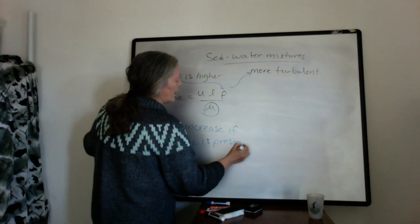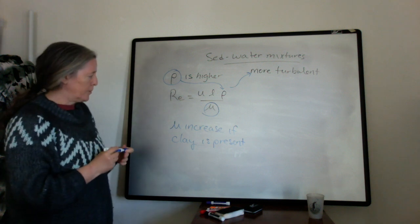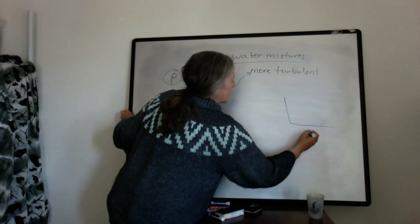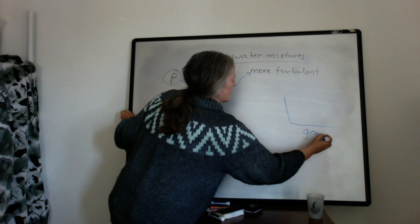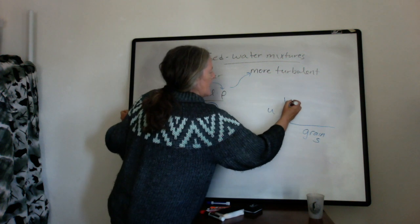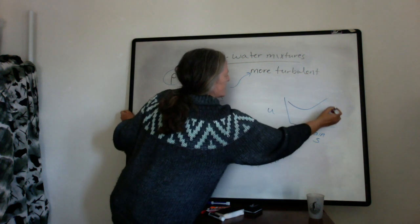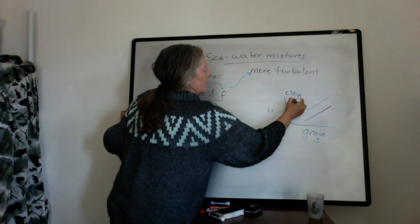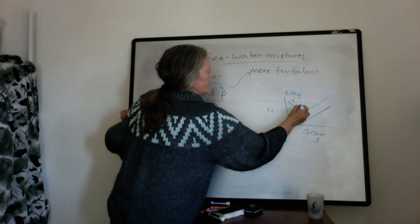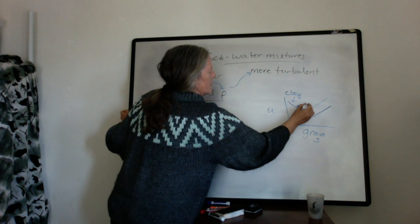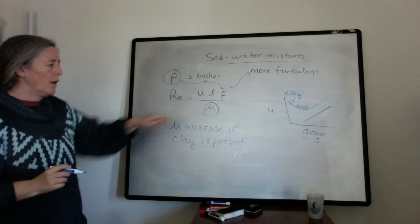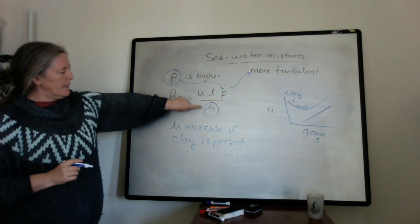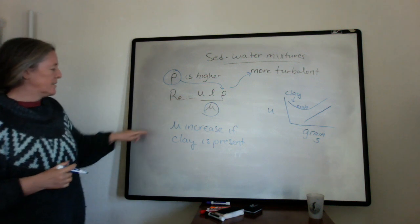So that has to do with the cohesiveness of clay minerals. Remember, with our Holstrom diagram, we have our grain size and our flow speed. And we have this characteristic here where we have the clay grain sizes are hard to erode. That cohesive behavior here is equivalent, it also produces an increase in viscosity.